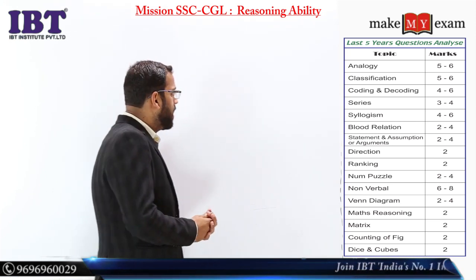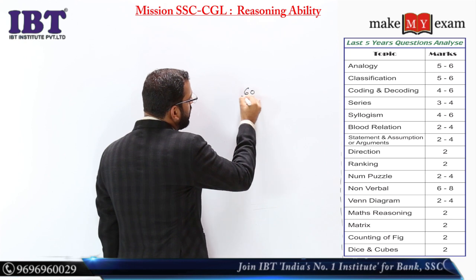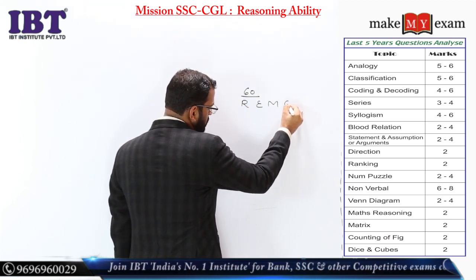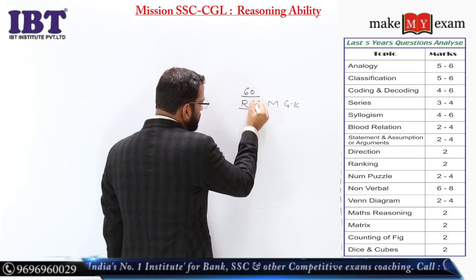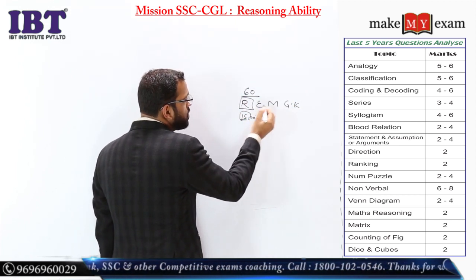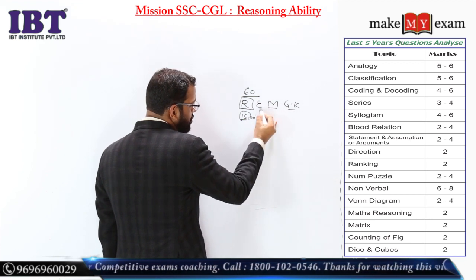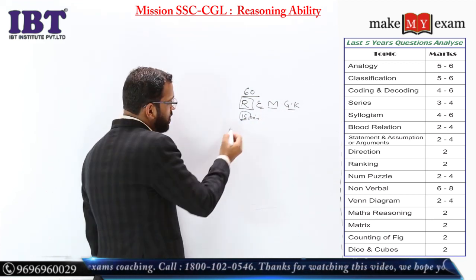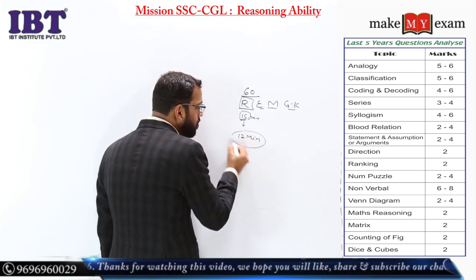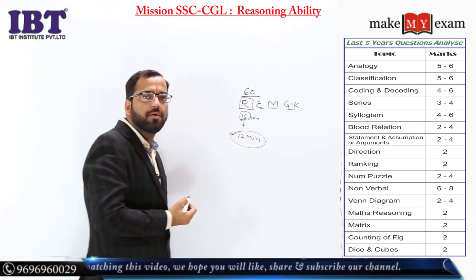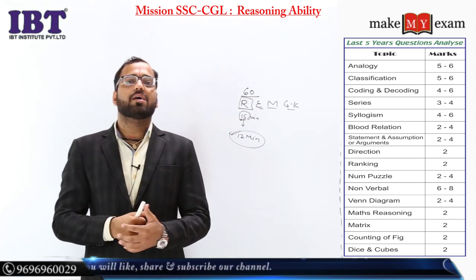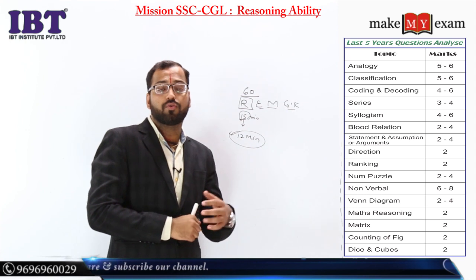ध्यान दीजिए, अगर आपके पास 60 number का paper है और 4 sections हैं। Reasoning के area में आपके पास max 15 minutes आते हैं, but maths, English, GK - इन सबके भी 15-15 minute हैं। तो somewhere हमें reasoning को 12 minutes के अंदर complete करना होगा।